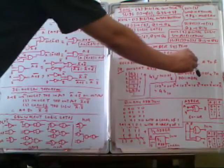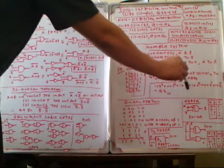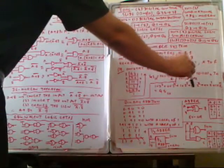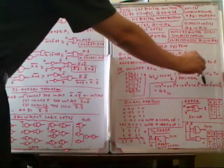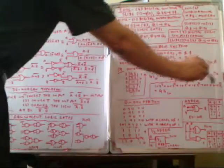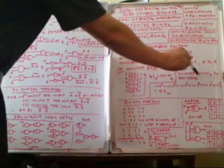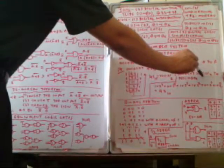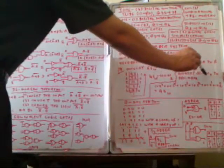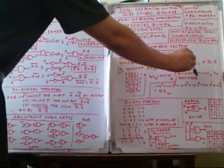The digits are 1, 0, 1, 1, 0, 1 at places zero through five. We calculate: 1 multiplied by 2 to the power of 5, 0 multiplied by 2 to the power of 4, 1 multiplied by 2 to the power of 3, 1 multiplied by 2 to the power of 2.